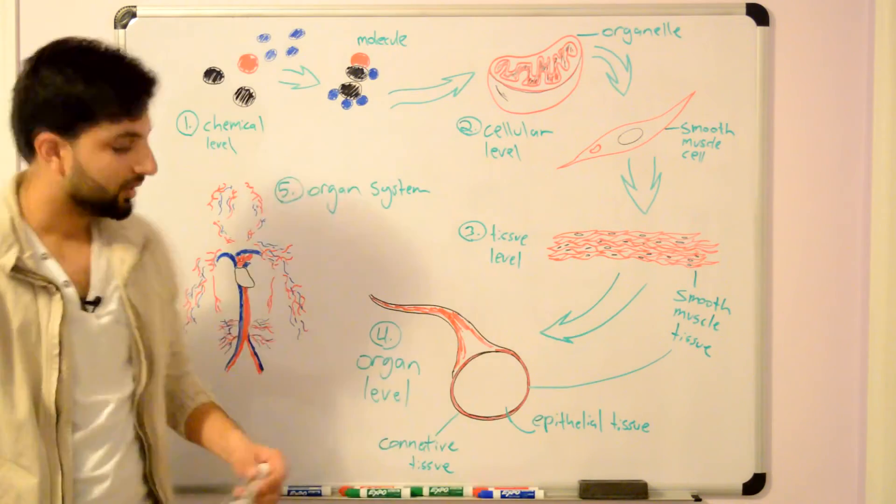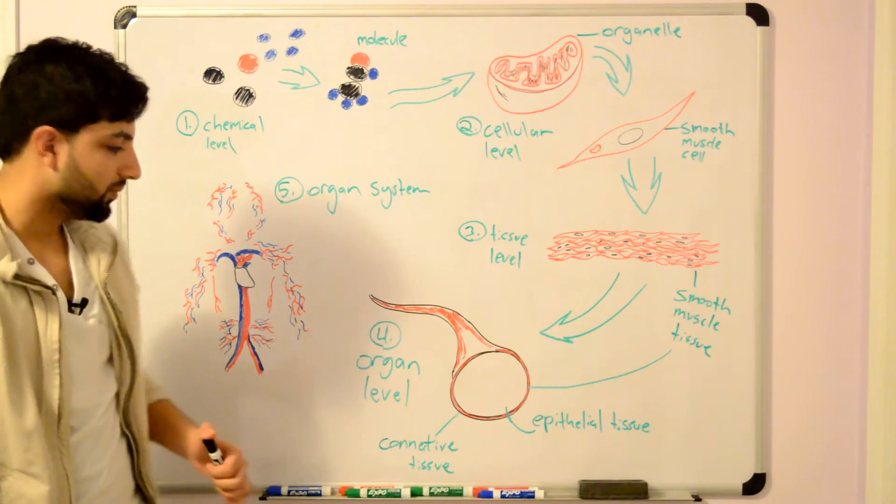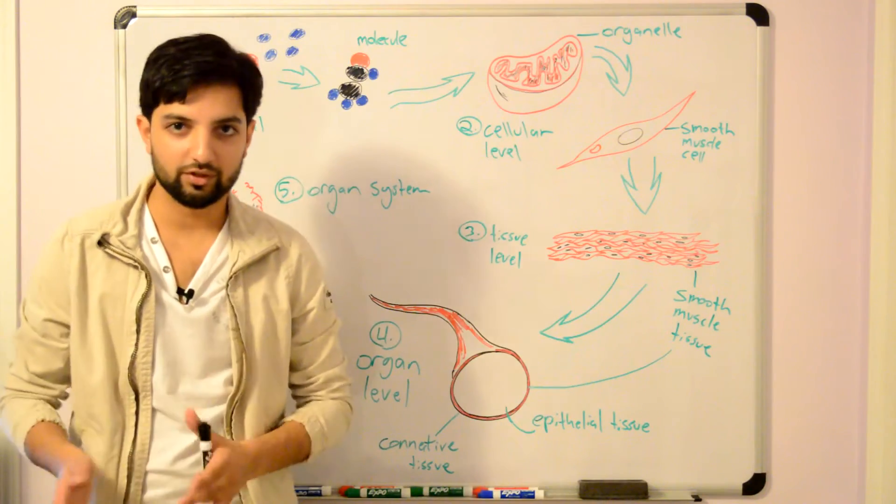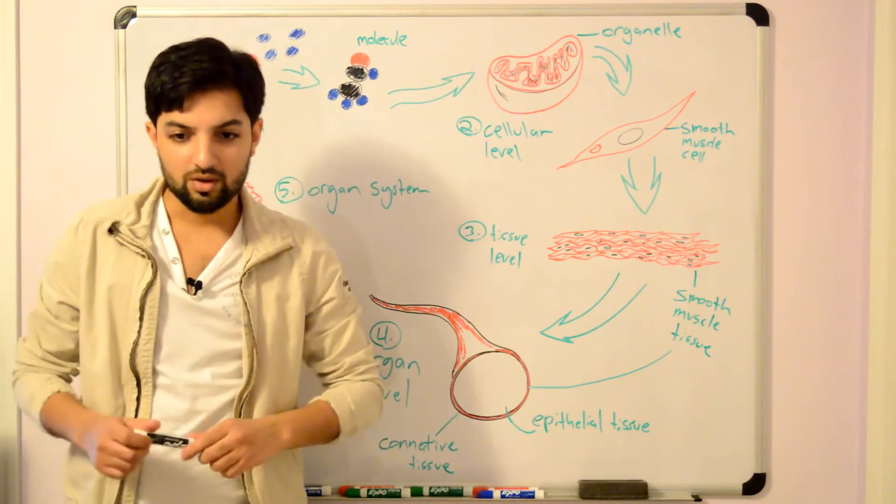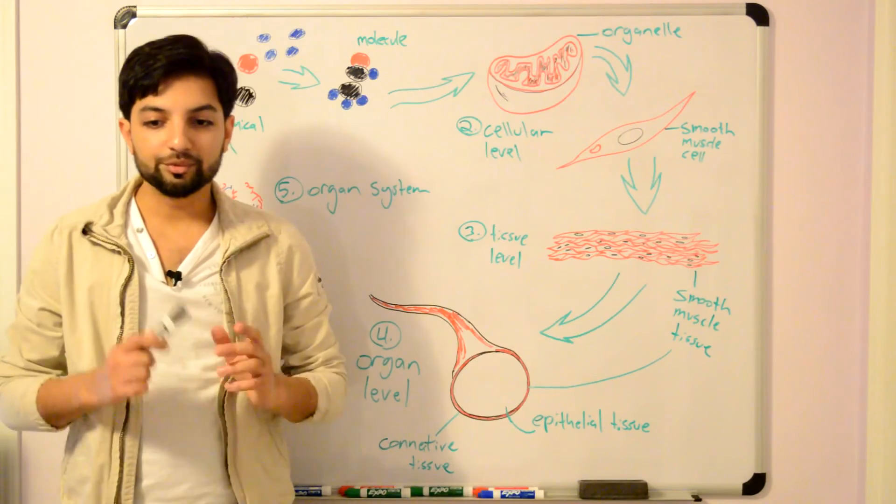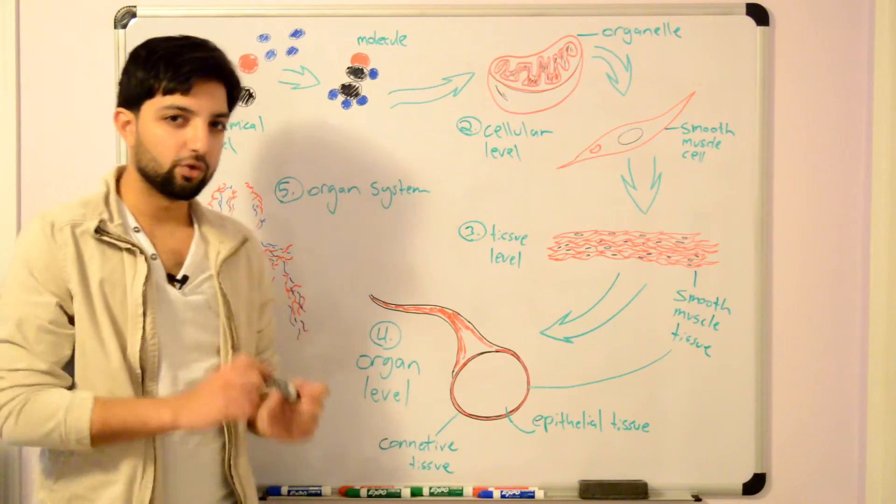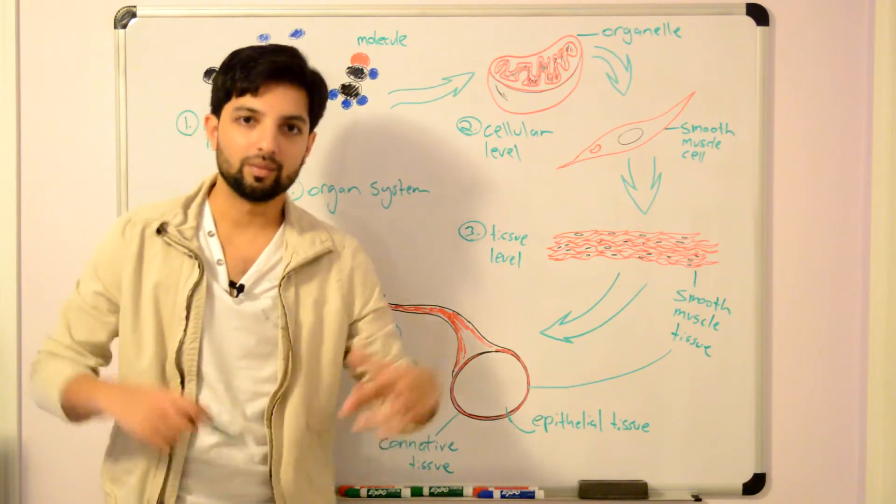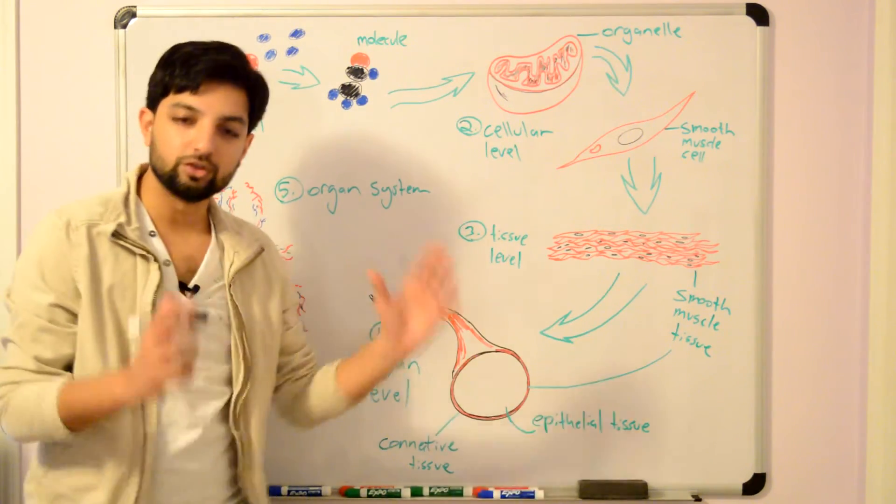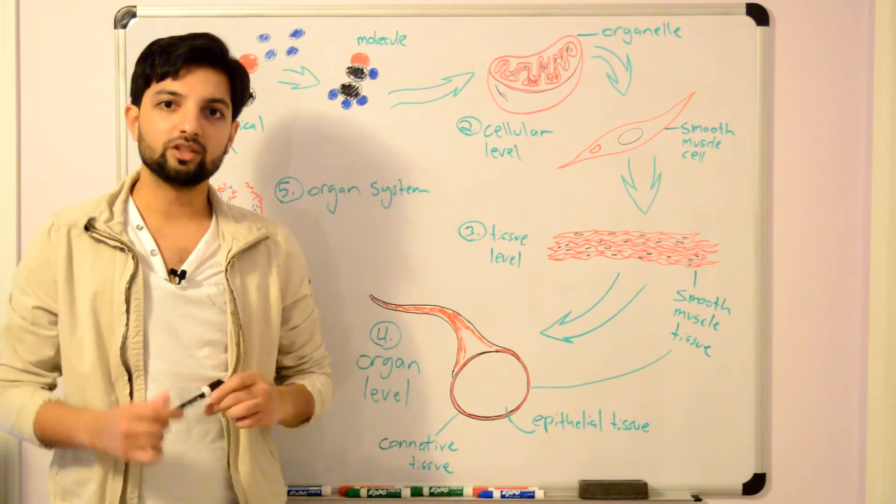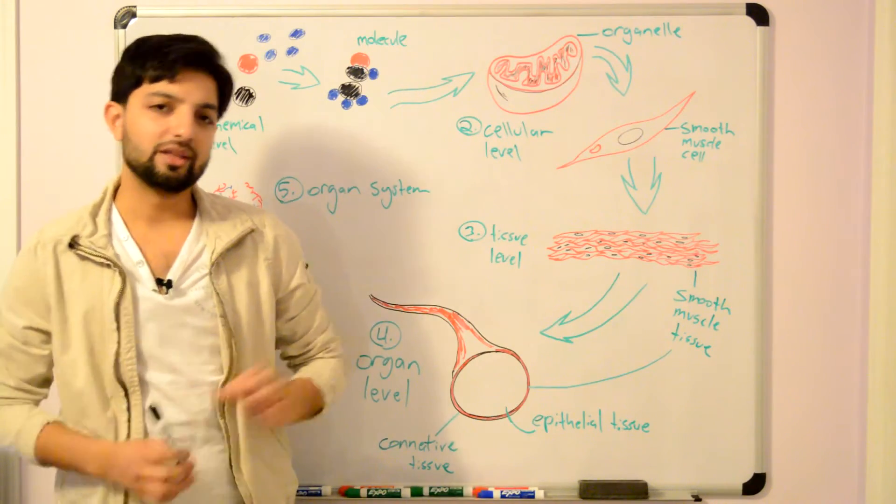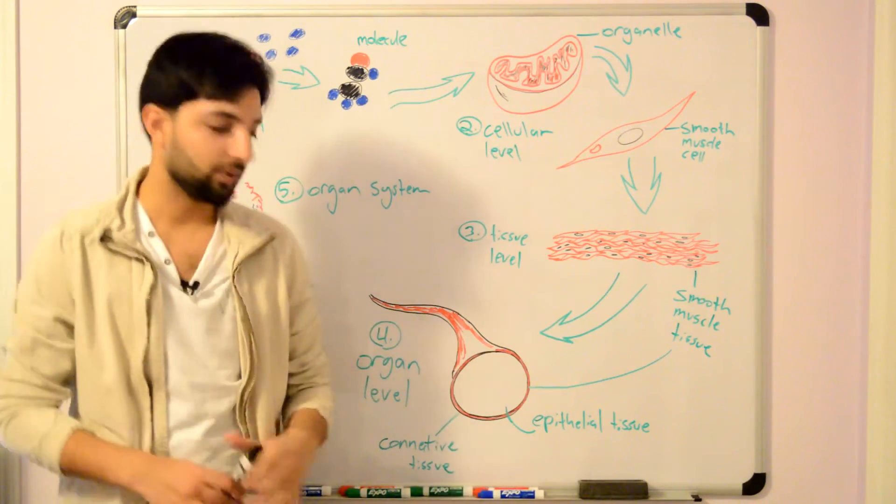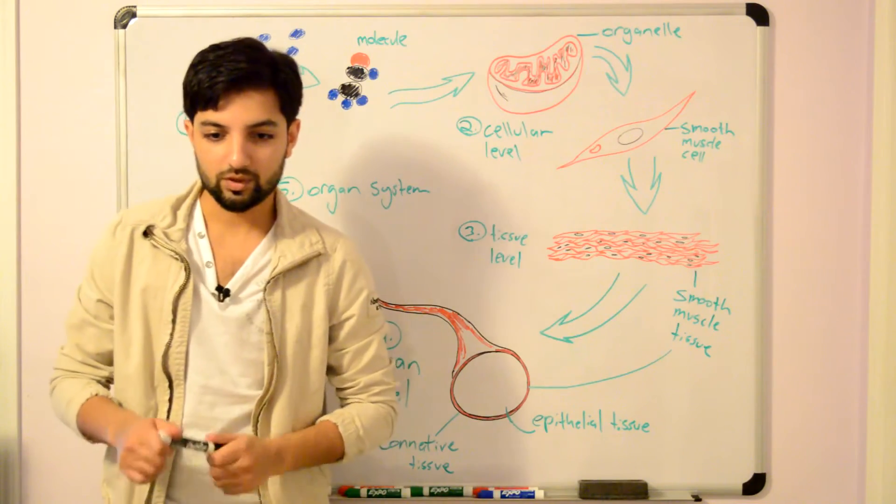The next level is the organ level. An organ has to be composed of at least two different types of tissues. If it's just one tissue, then it's a tissue. Organs perform specific functions for the body that no other organ can perform. As a general concept, organs perform a specific function unique to them in the human body. They can perform extremely complex functions.